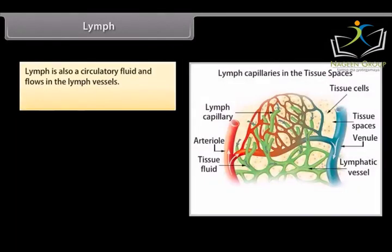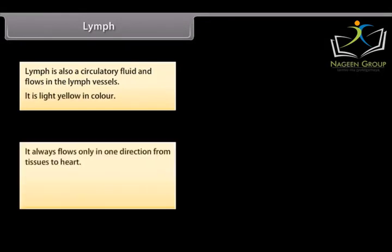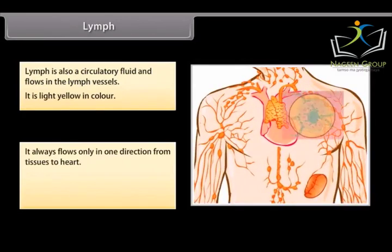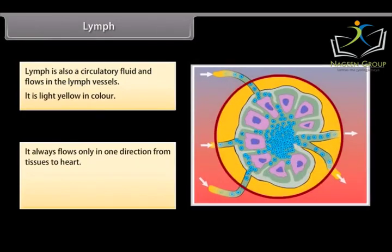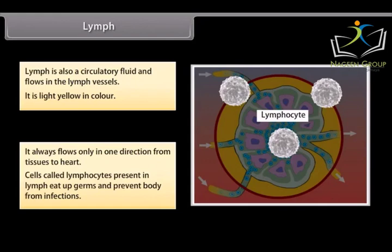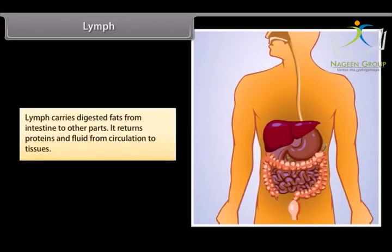Lymph: Lymph is also a circulatory fluid and flows in the lymph vessels. It is light yellow in color. It always flows only in one direction from tissues to heart. Cells called lymphocytes present in lymph eat up germs and prevent body from infections. Lymph carries digested fats from intestine to other parts. It returns proteins and fluid from circulation to tissues.